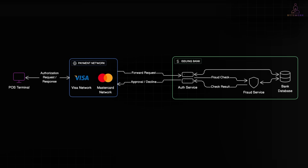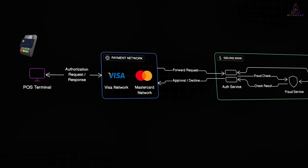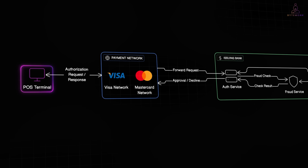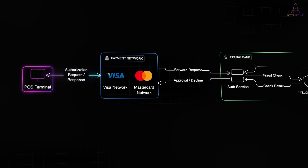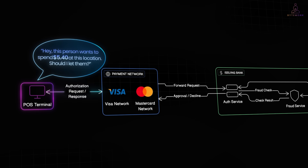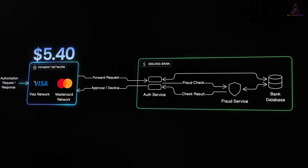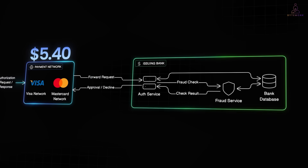So, how does a credit card transaction actually work? When you tap your card at a coffee shop, a lot happens in under a second. The merchant's point-of-sale terminal reads your card details and creates what's called an authorization request — basically a message that says: hey, this person wants to spend $5.40 at this location, should I let them? That message travels through the payment network. If you have a Visa card, it goes through Visa's network; Mastercard, same idea. These networks act as the routing layer — they figure out which bank issued your card and forward the request there. Your bank, called the issuing bank, now makes the decision.